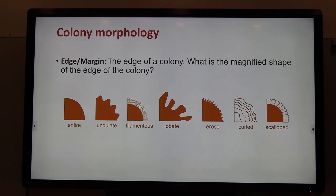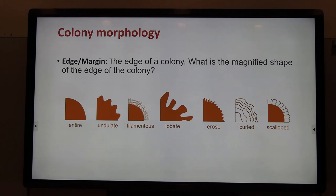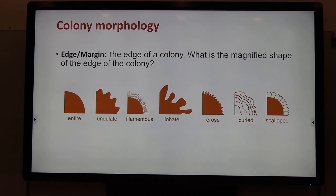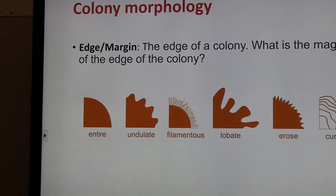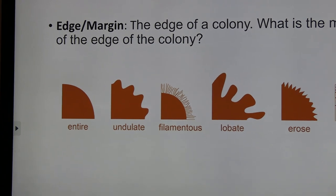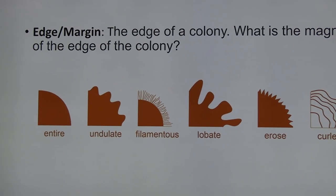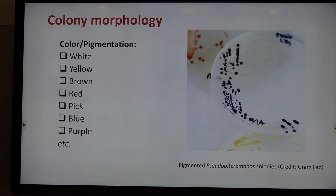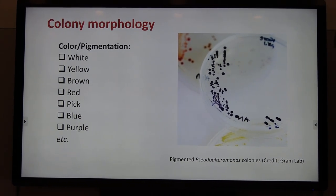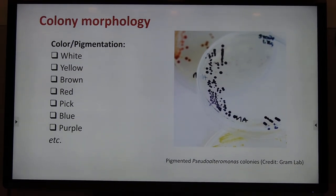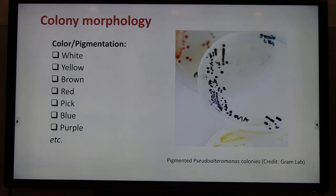Some colonies also have different shapes of edges. Sometimes the edges are quite easy to view, such as the entire shape — you can see with your naked eye that they have sharp ends. But for some edges, such as filamentous ones, they are quite hard to see with your naked eyes, and you might need a microscope or a staining method. Some bacteria can also produce pigments of various colors. For example, this is a pigmented Pseudoalteromonas colony — you can see blue, red, or yellow color. These colors come from secondary metabolites.